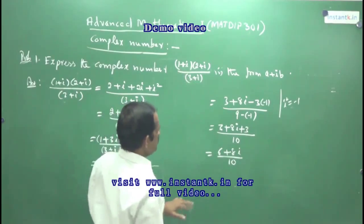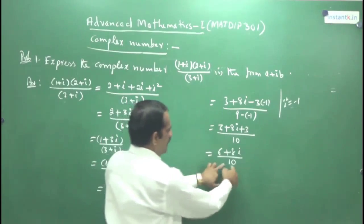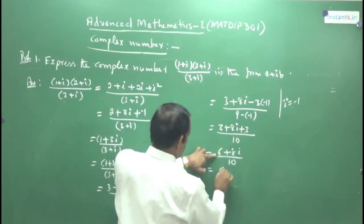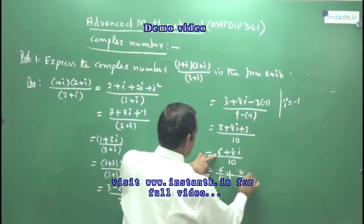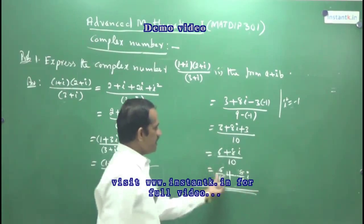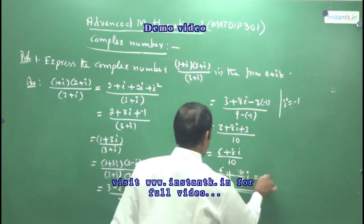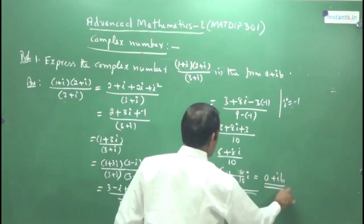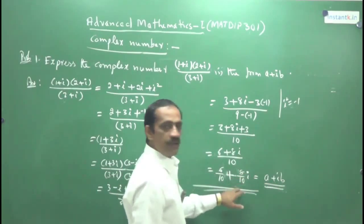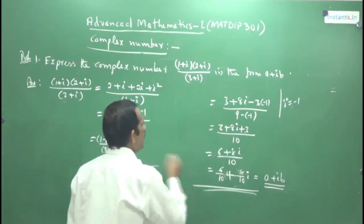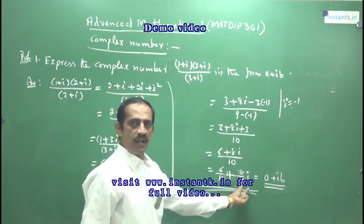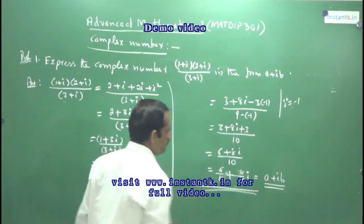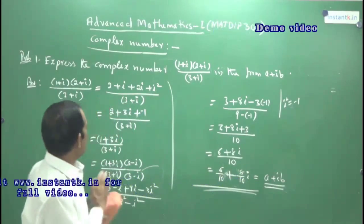Now you have to write this in the form a + ib. Since 10 is common for both terms, you can write it as 6/10 + (8/10)i. So this complex number is in the form a + ib, where a = 6/10 and b = 8/10. That is the answer. So, expressing a complex number in the form a + ib — one question like this will always be asked.